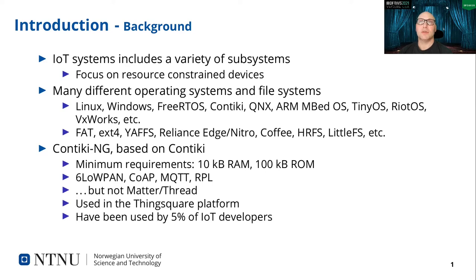Kontiki Next Generation, also called KontikiNG, started as a fork of Kontiki OS and is under active development—this is the version we base our work on. The operating system is designed for resource-constrained devices with minimum requirements of 10KB of RAM and 100KB of non-volatile memory. One major advantage is that most IoT-specific protocols are already implemented, such as 6LoWPAN, CoAP, MQTT, and RPL. Unfortunately, routing protocols for Thread used in MATTER are not among the supported protocols.